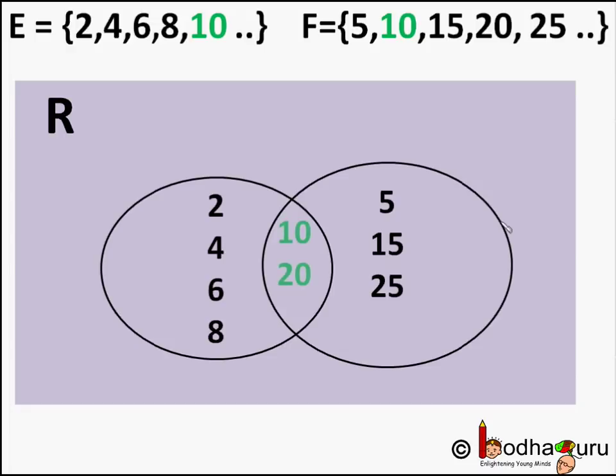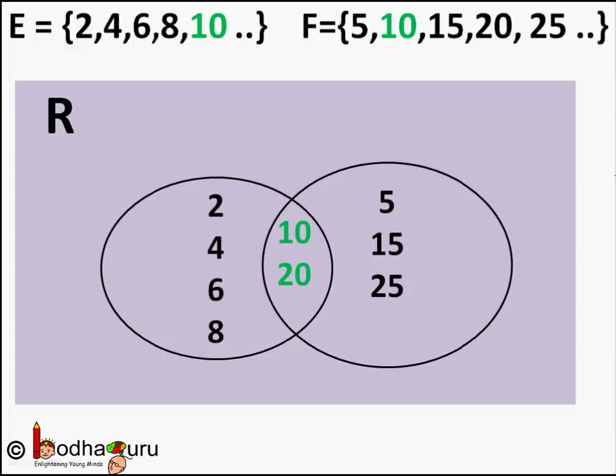Because few numbers like 10, 20, 30 are even numbers as well as multiples of 5, so they represent the overlapping area. To reiterate, two circles intersect each other. The common part of the circle contains the elements which are even numbers and also the multiple of 5. This includes numbers like 10, 20, 30 and so on.